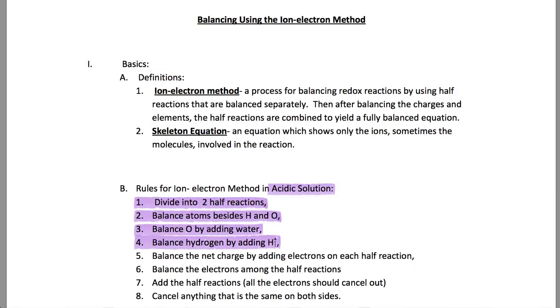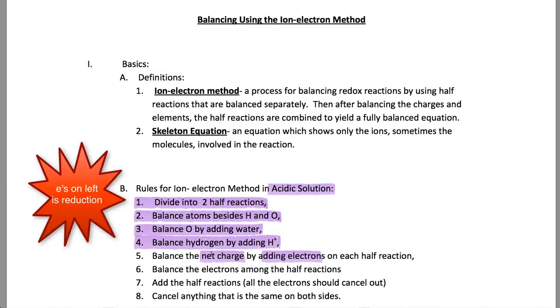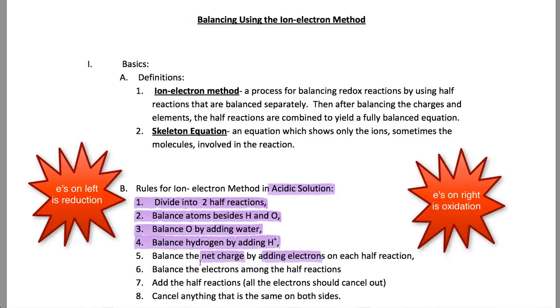But now that we added H+, what do we have to balance? Well, we have to balance the charge. The charge needs to get balanced, and we do that by adding electrons on each half reaction. And depending on which side the electrons needed to be added to, you can determine which one's undergoing oxidation. Remember, the electrons on the left is reduction, and electrons on the right is oxidation.